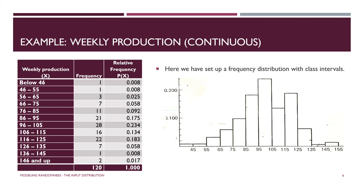This first example is weekly production. The variable was organized into intervals — 45 to 55, 55 to 65, 65 to 75, and so on, with the first and last categories being everything below and everything above. We have 120 weeks of data organized into this distribution. It has a decent shape and could probably be fit to any number of theoretical distributions, but the point here is just to show what continuous data looks like after constructing intervals and graphing into a histogram.